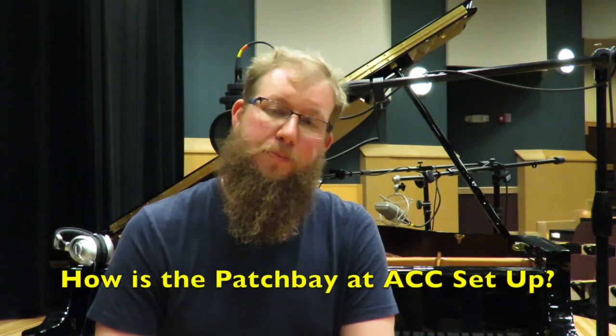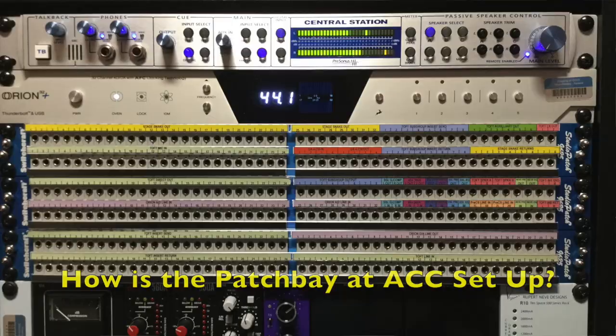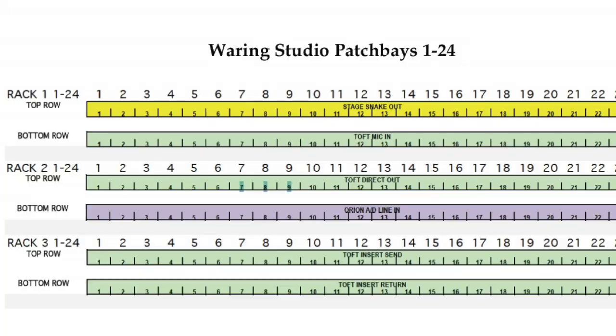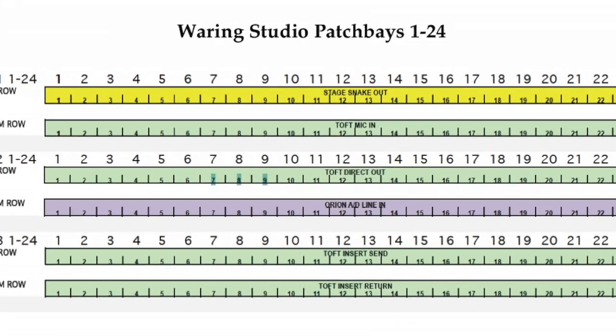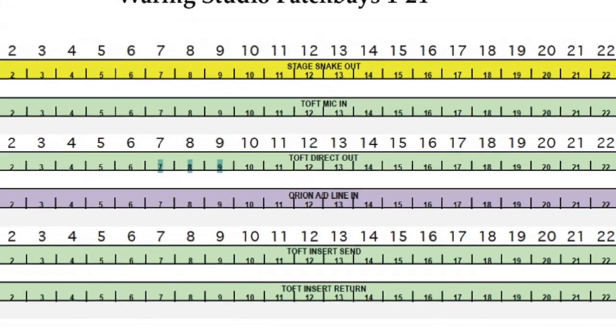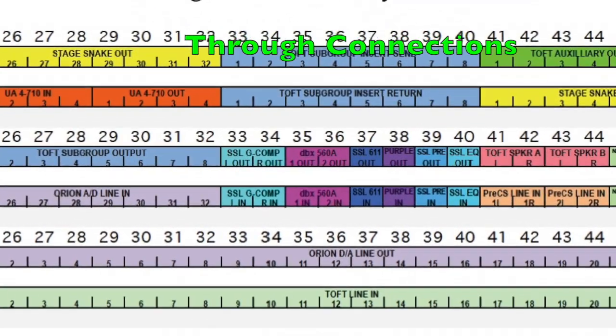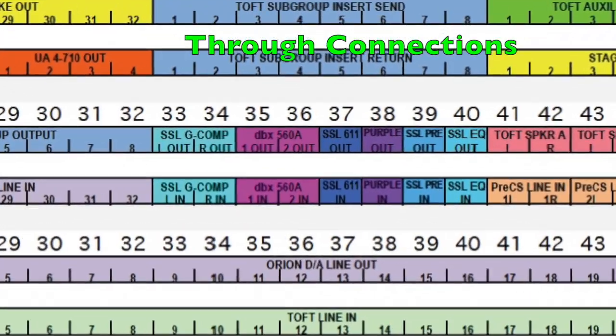So that would be a perfect example of when you would want to use a through configuration. How is the patch bay here at ACC set up? It's set up in an industry standard fashion where outputs are on the top row and inputs are on the bottom. However, there were cases where we had to use a through configuration where we had the same piece of equipment on the top and bottom, so the output was on top and the input was on the bottom, and we set those particular patch points to through.